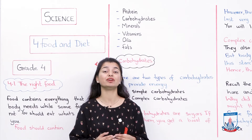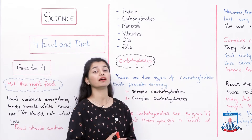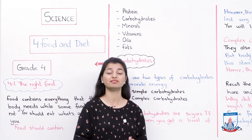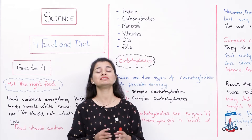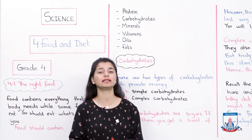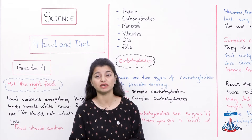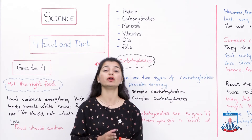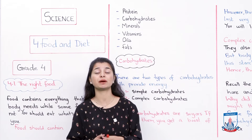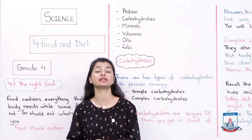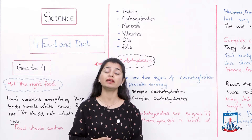The different items on this list include proteins, which we discussed in detail, carbohydrates, minerals, vitamins, and oils and fats. Mainly we talked about proteins, which are very important for the muscles and their growth. We talked about eggs, red meat, and fish — foods that have a lot of protein — and why you should include them in your diet regularly.